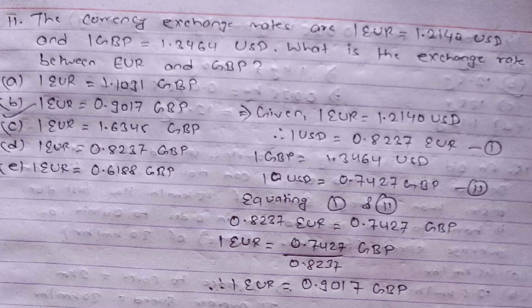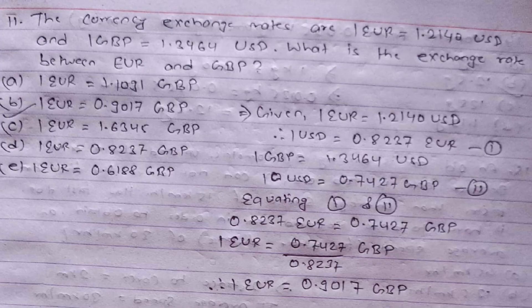Question eleven is a currency exchange rate problem. Given that 1 euro = 1.2140 USD and 1 GBP = 1.3464 USD, what is the exchange rate between euro and GBP? By calculating the value of 1 USD in terms of both euro and GBP and equating them: 0.8237 euro equals 0.7427 GBP. Therefore 1 euro equals 0.7427 / 0.8237 GBP, which gives 1 euro = 0.9017 GBP. The correct answer is option B.